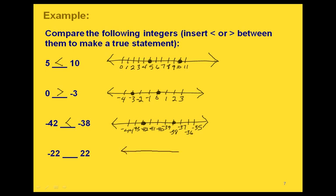Finally, let's compare negative 22 and positive 22. I don't want to graph all of the numbers in between, so let's start with negative 24 and go by twos. If we graph all the way across, at some point we end up at positive 22, with zero right in the middle. The important thing is to notice where these two numbers are relative to each other: negative 22 is to the left of positive 22, so this is a less than.